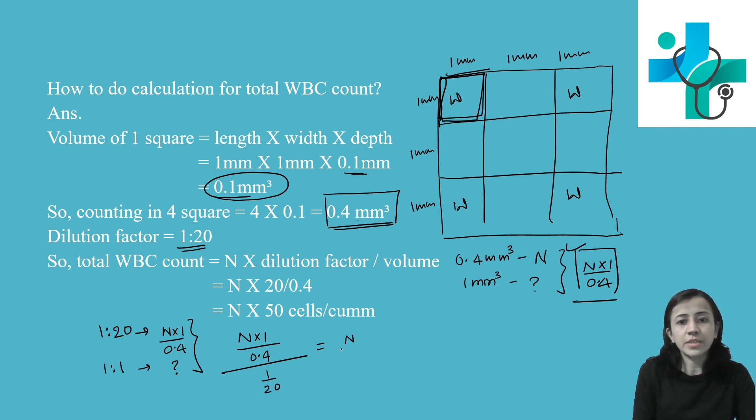That equals N times 20, which equals N times 50. So this is the calculation for total WBC count. Whatever cells you are counting in these four corner squares, you have to add them - that is your N - and multiply them with 50.